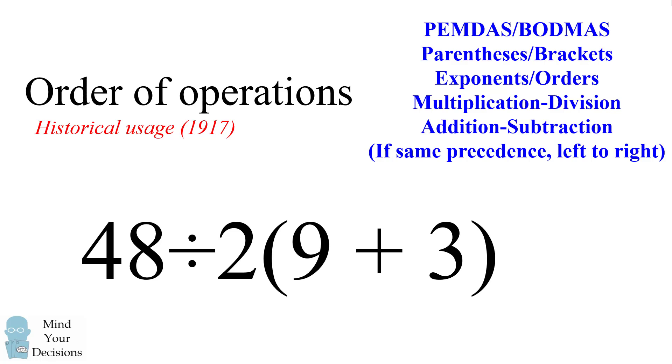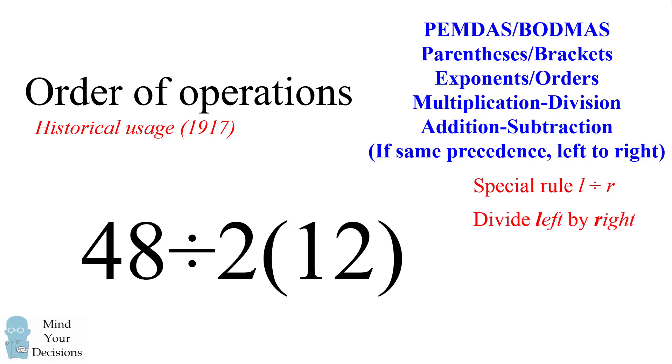So when we go under this interpretation, we still start out the same way. We have a parenthetical expression, 9 plus 3, and we evaluate that first. So this becomes 12. The question is what to do next. So historically there was some usage that if you use this division symbol, you would divide everything on the left by everything on the right.